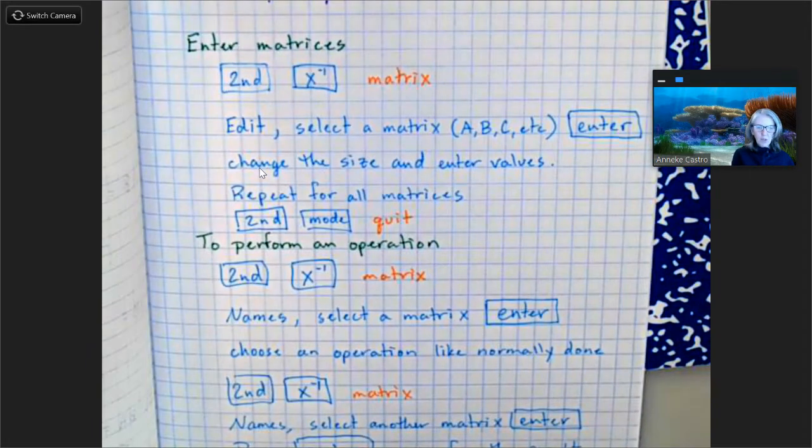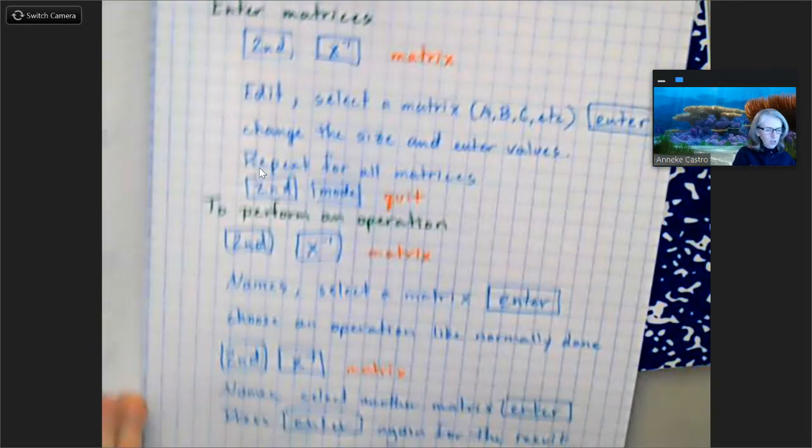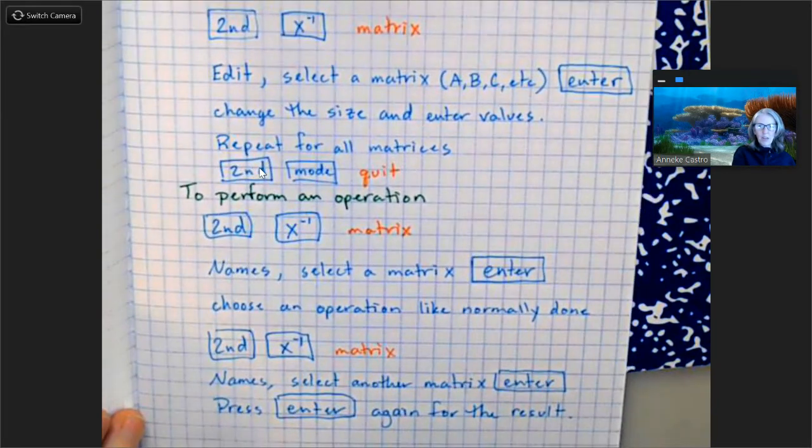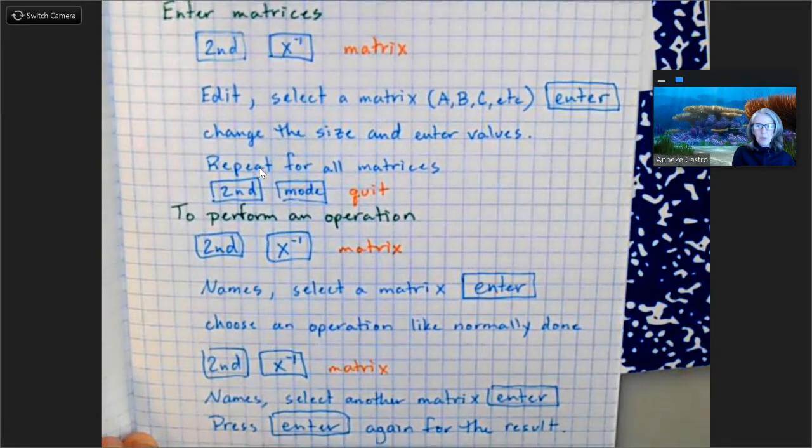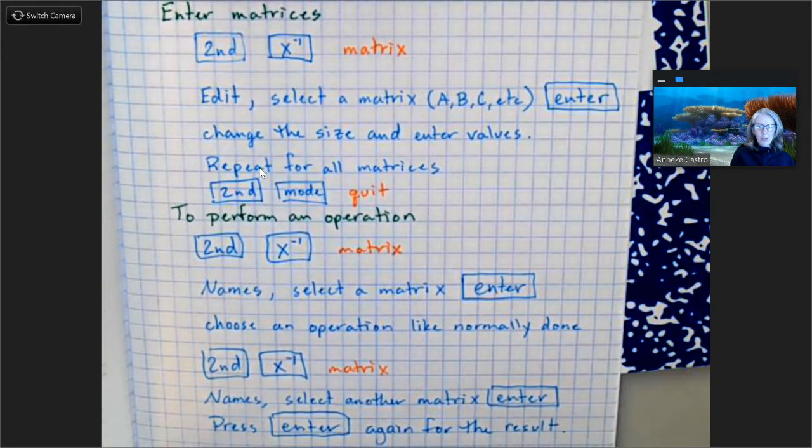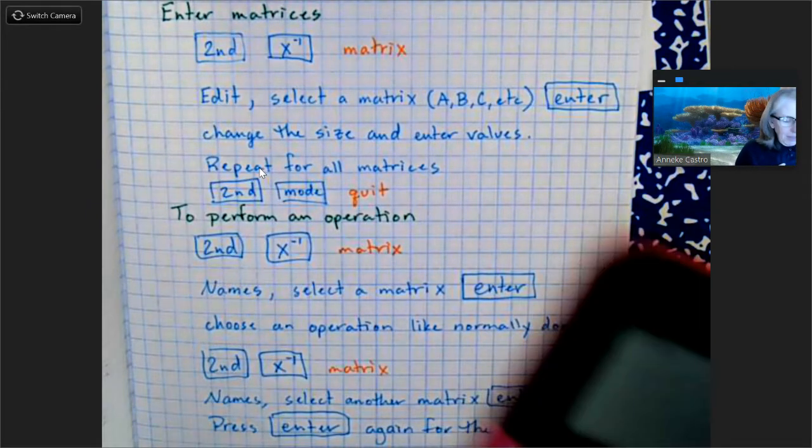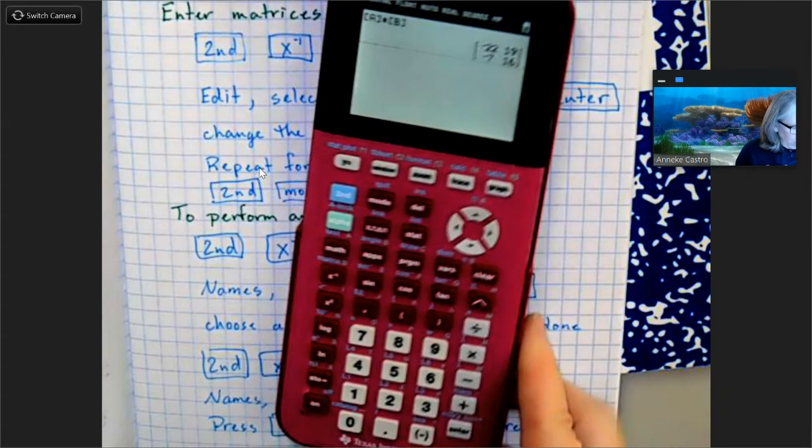Okay, so here are the instructions for doing it on the graphing calculator. It's pretty simple, you just need to get your matrices in there and then you can do whatever operations. So remember before when we were adding matrices, in order to add matrices they have to be the same size. So just for fun, let's see what happens if I do, if I try and add these two matrices.